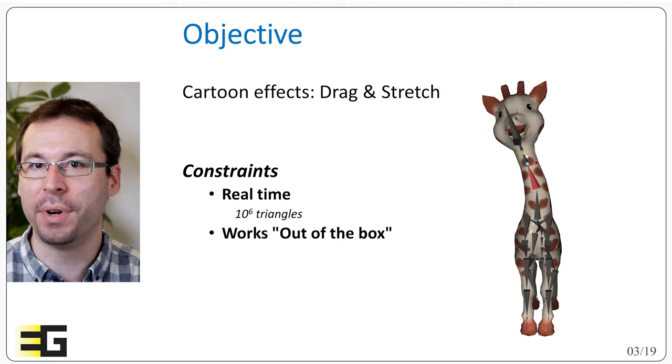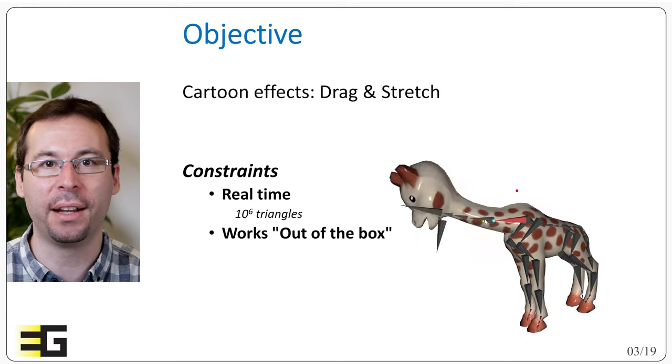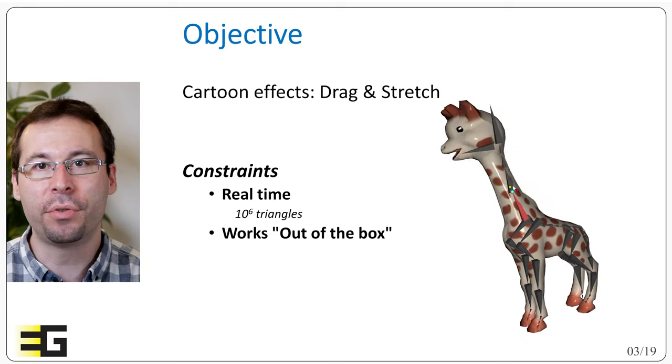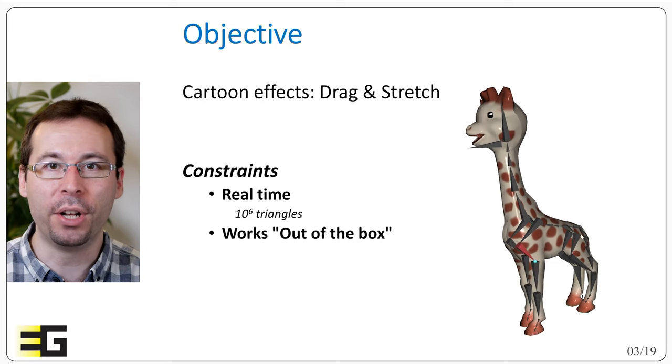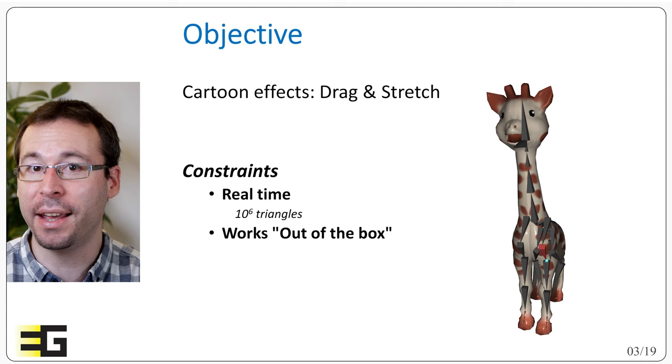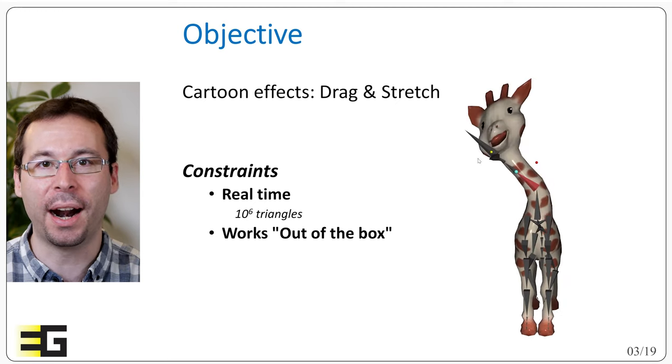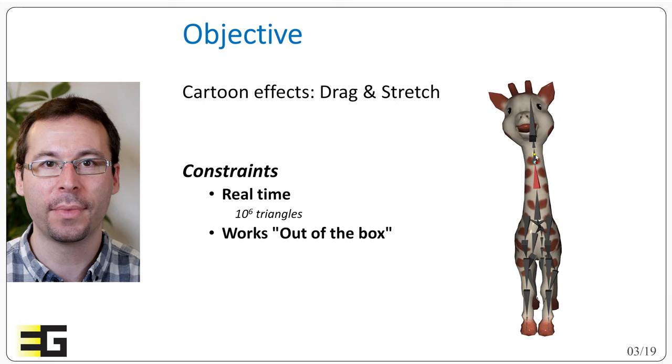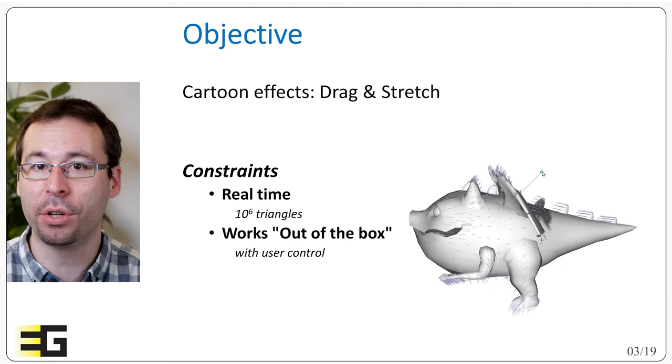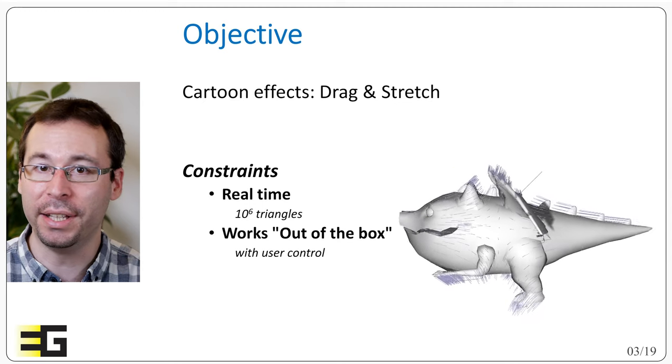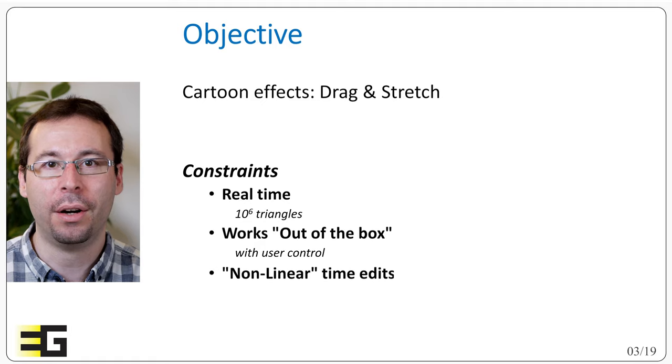We also want a method that can be used directly out of the box on an existing skinned mesh. For instance, we don't want to ask the artist to modify its model or constrain it to a specific case of skinning weights. In industry, the rigs, they are the heart of the animation pipeline. Skeletons may be shared through multiple models and weights are carefully crafted. So we rather want to reuse them as they are, as direct inputs. Of course, we still want to keep an expressive and as direct as possible control on the result, so that an artist can actually easily tune the result to what he wants.